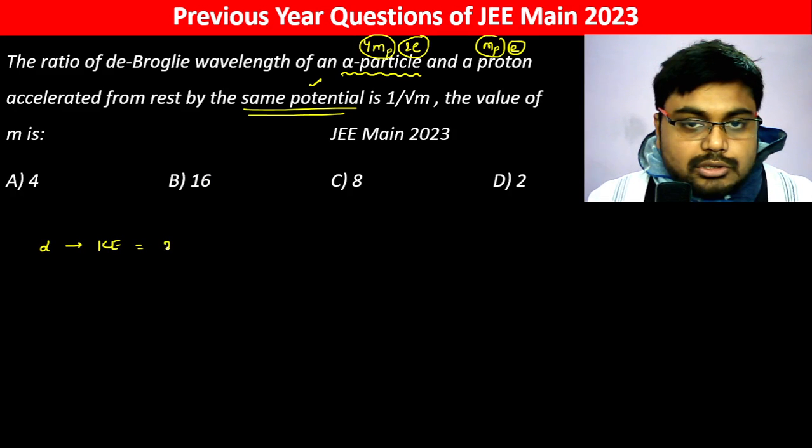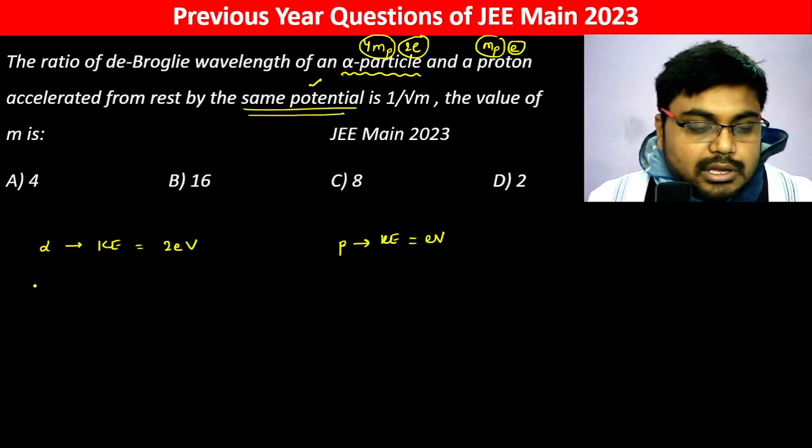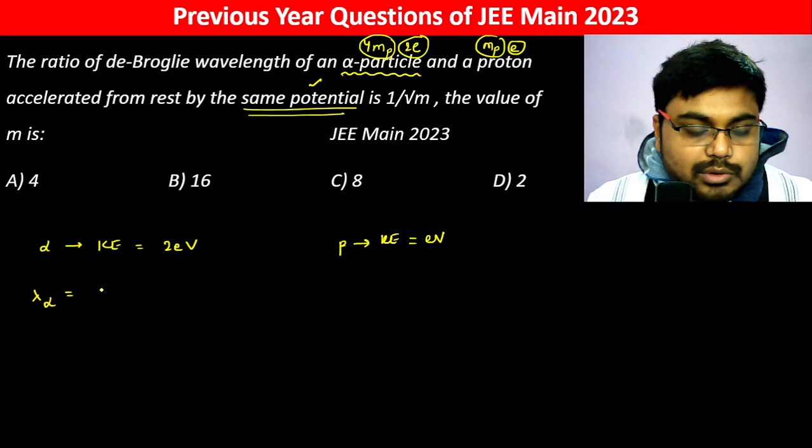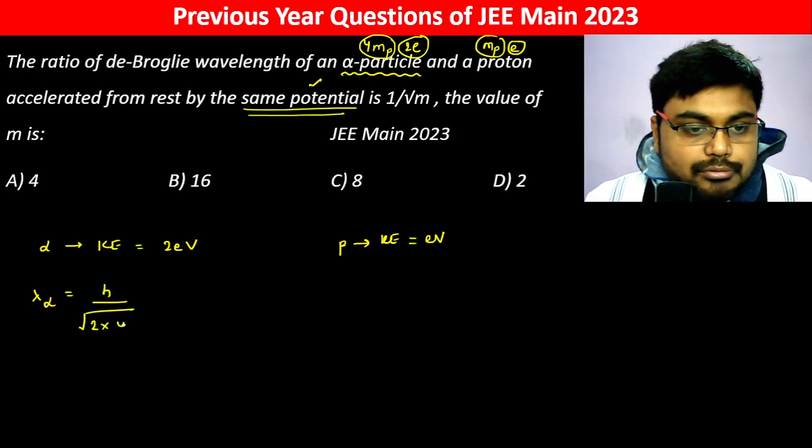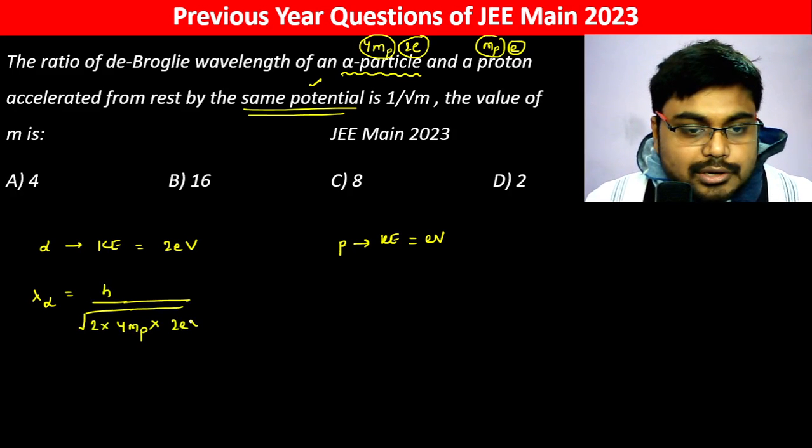Alpha particle kinetic energy and proton kinetic energy. So lambda of alpha is equal to h divided by root over 2 into 4 mass of proton into the kinetic energy 2eV.